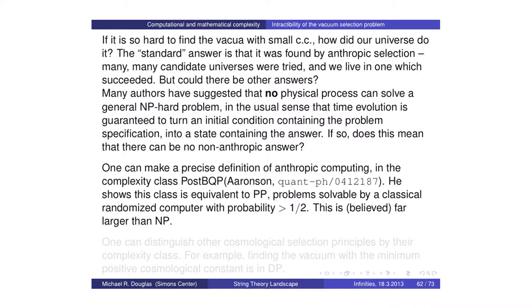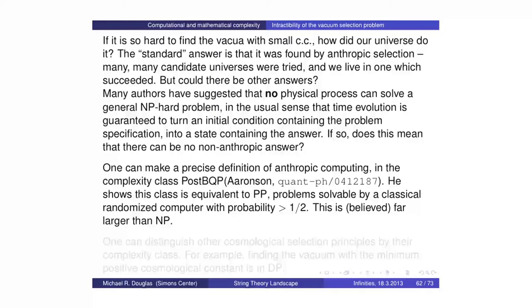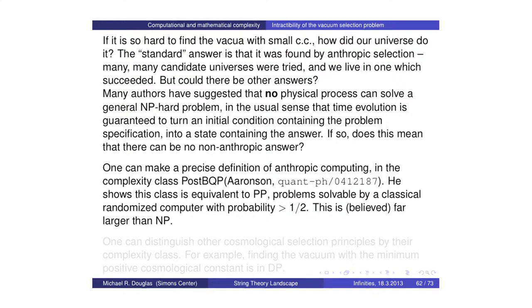There is a computational complexity class corresponding to quantum computing with anthropic ability: post-BQP. The anthropic ability is basically to start your computer, run it, and have it produce three outcomes — yes, no, or self-destruct — and you start off a bunch of these in parallel universes. As long as you live in a universe where it finds the answer, you've solved the problem. Aaronson showed that post-BQP was equivalent to a much simpler class to define, and this class is far larger than NP. That's in some sense the theoretical justification for why the multiverse can solve what a single computer cannot.